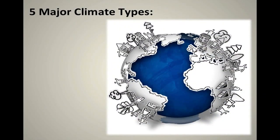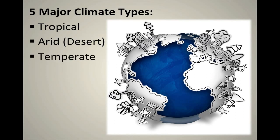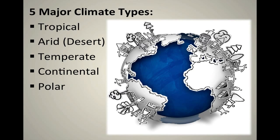The five major climate types include: tropical, arid or desert — and arid is another word for dry, so an arid climate type is often referred to as a desert climate type — temperate, continental, and last but not least, polar. Those are our five major climate types.